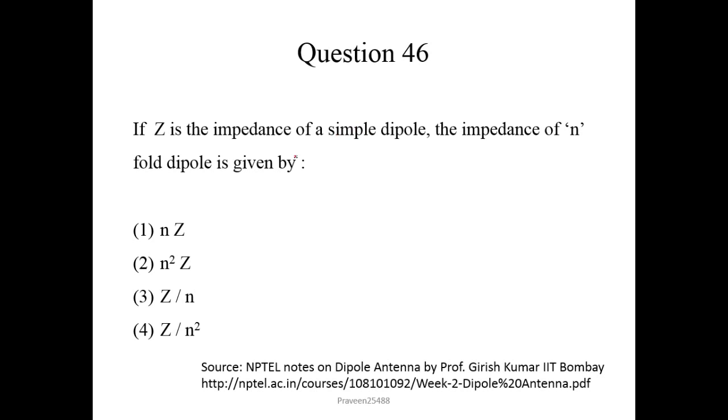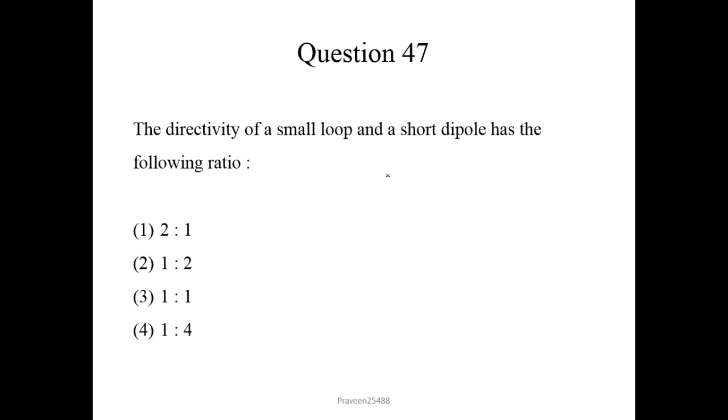Question number 46. If Z is the impedance of simple dipole, the impedance of a folded dipole is given by. So here the folded dipole antenna, you can find in the book by Girish Kumar. The answer is 4 square Z. Second option is the ratio 1:2:1. Third one is correct.